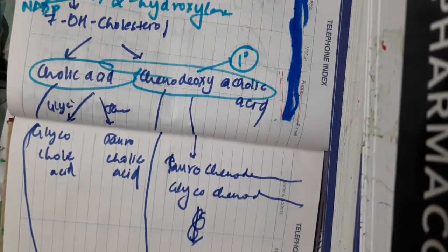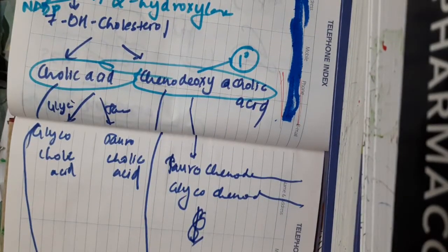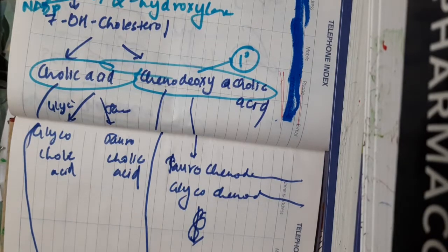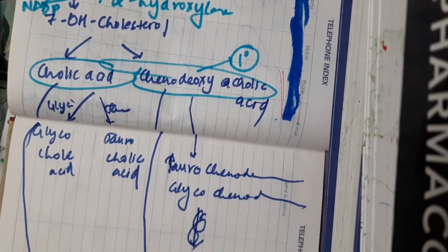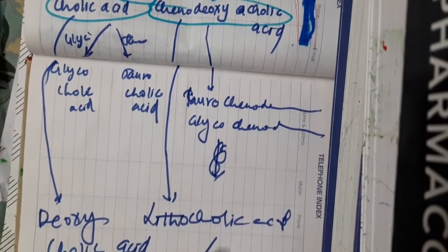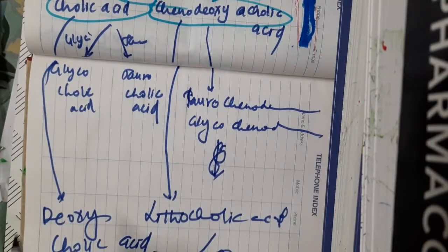Cholic acid combines with glycine to form glycocholic acid, and cholic acid combines with taurine to form taurocholic acid.